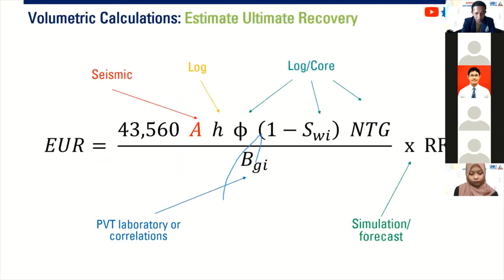After we already obtain the gross rock volume, the area and then thickness, and then we obtain all the data like this one. The area, we take that data from seismic. Thickness from log, porosity, initial water saturation, and net to gross from log, or we can also analyze them from core. BGI or formation volume factor for gas, we take that from PVT laboratory, or we can also do correlations.